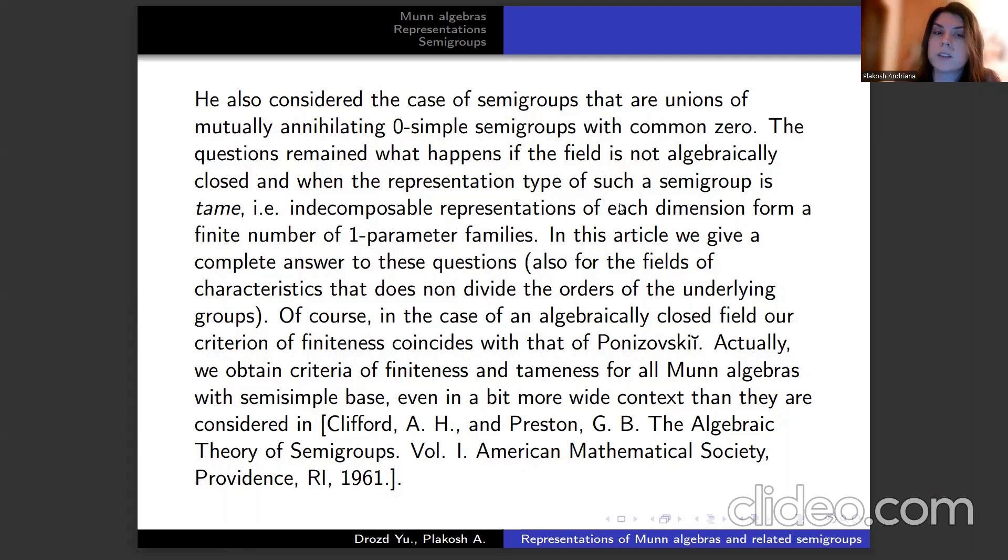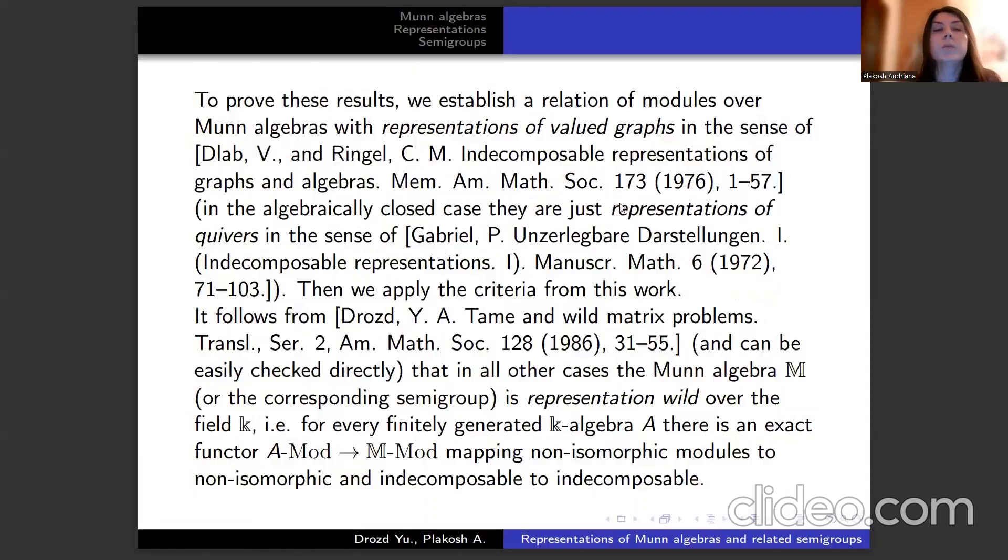Also for the fields of characteristics that do not divide the order of the underlying groups. Of course, in the case of an algebraically closed field, our criterion of finiteness coincides with that of Ponizovsky. Actually, we obtain criteria of finiteness and tameness for all Munn algebras with semi-simple base, even in a bit more wide context than they are considered in Clifford and Preston's paper.